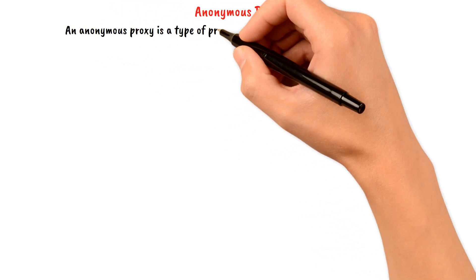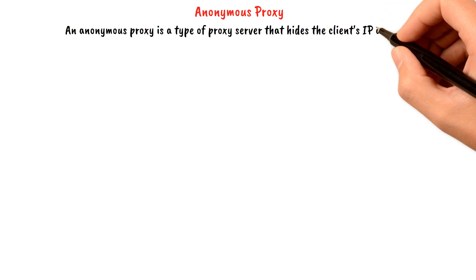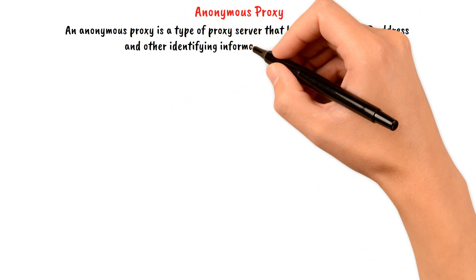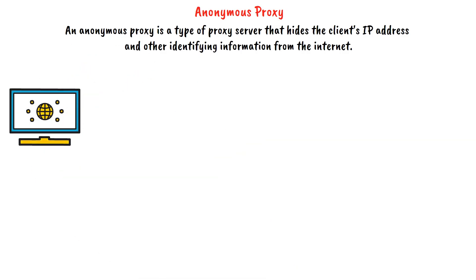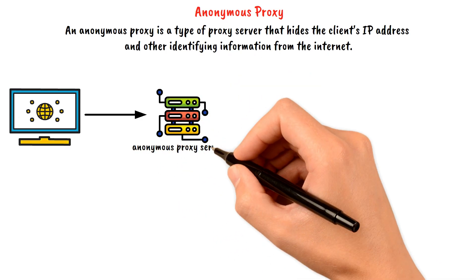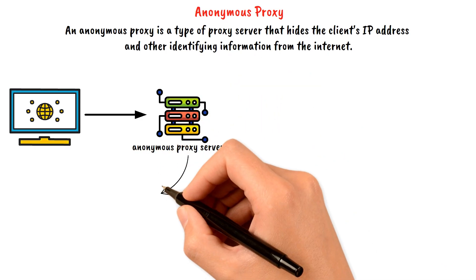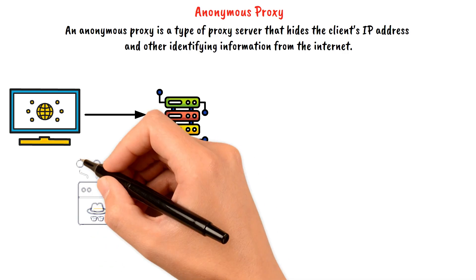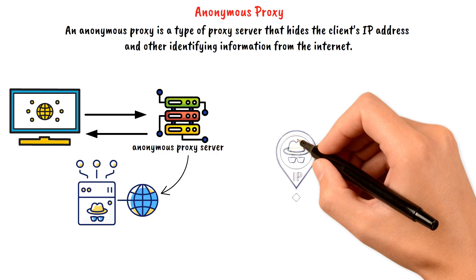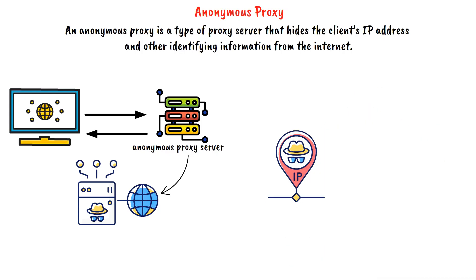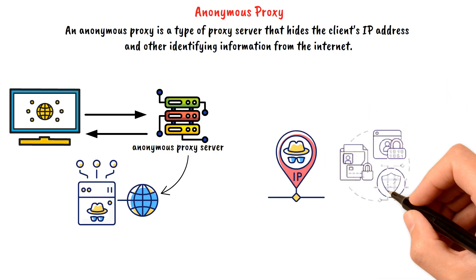An anonymous proxy is a type of proxy server that hides the client's IP address and other identifying information from the internet. When a client device sends a request to access a resource on the internet, the request is first sent to the anonymous proxy server. The proxy then retrieves the requested resource from the internet on behalf of the client and forwards it back to the client, without revealing the client's IP address or other identifying information.